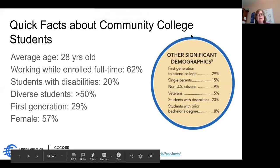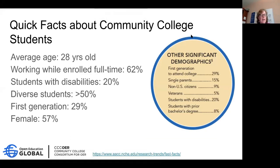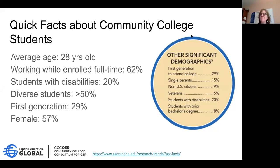Quick facts about community college students. I'm Una Daly, director of the Community College Consortium for OER. Our average student is 28 years old. The majority of them are working while enrolled. We actually have more part-time students than full-time students, and they are more likely to be working while attending school. Our students suffer a lot of barriers — not only time and money. We have a very diverse student body; our student population is more diverse than not. First-generation students are also very high.